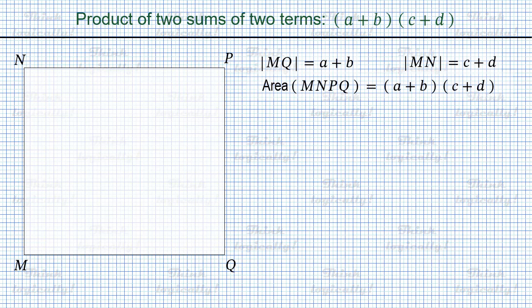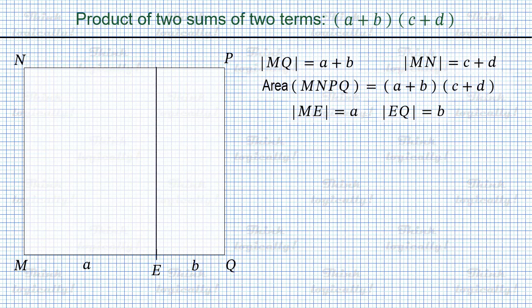Let's draw on side MQ segment ME with length a. Then the length of the remaining segment EQ is b. Through point E we draw a line parallel to sides MN and PQ, meeting the opposite side NP at point F. In the similar way, on side MN we draw segment MG with length c, so the remaining segment GN has length d.